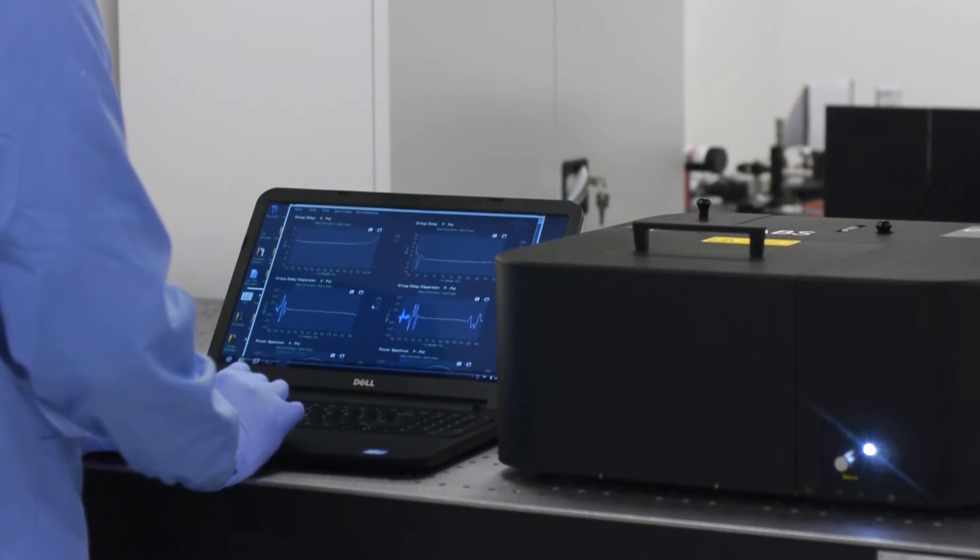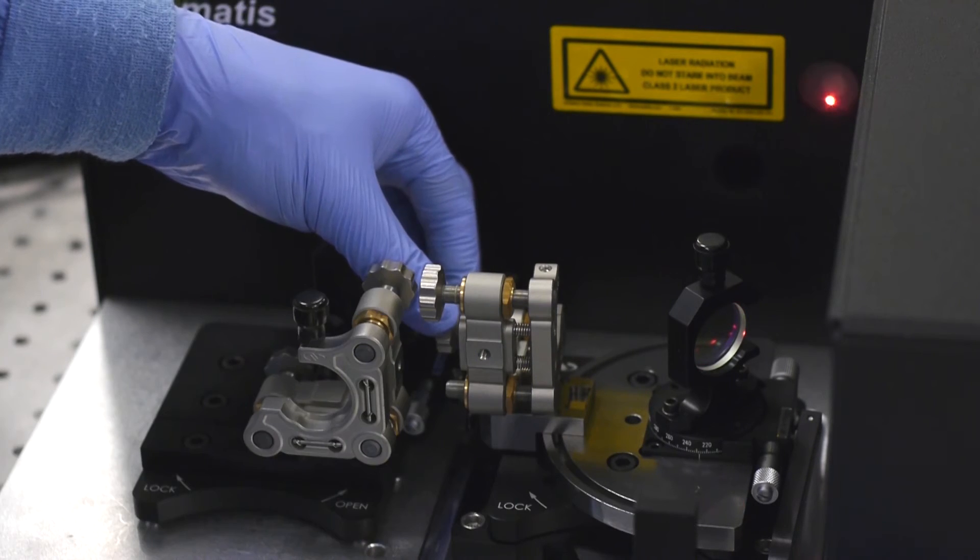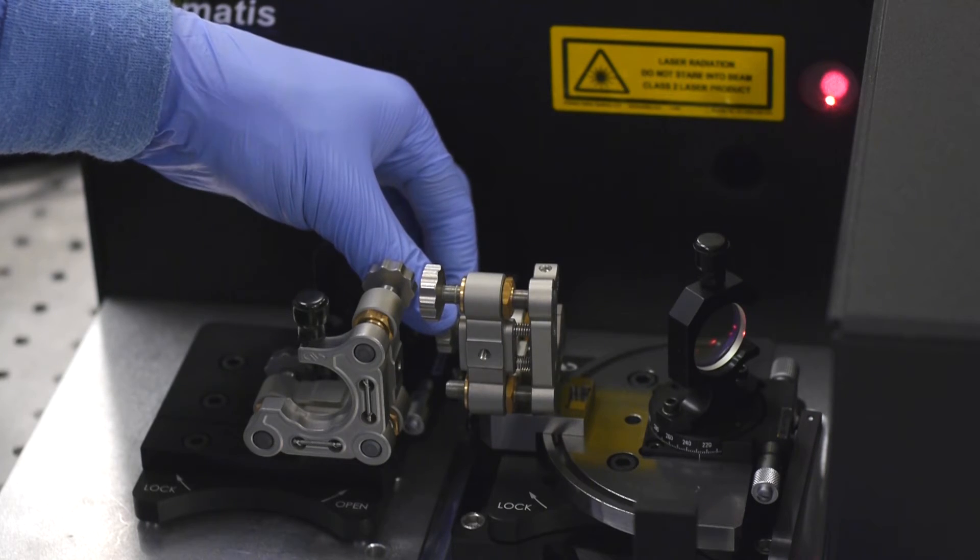Group delay dispersion can be measured in different configurations from 500 to 1650 nm at angles from 0 to 70 degrees.